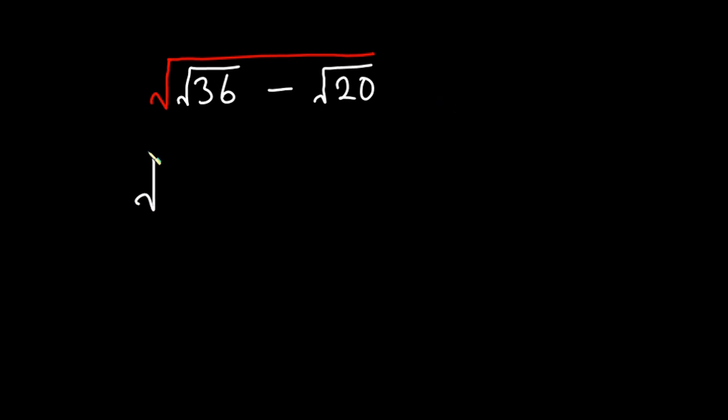Now let's get started. First, let's keep the big square root and then simplify this whole thing. Square root of 36 is 6 minus square root of 20, which could be written as square root of 4 times square root of 5. And we can also simplify this as square root of 6 minus 2 square root of 5.